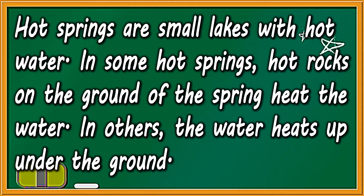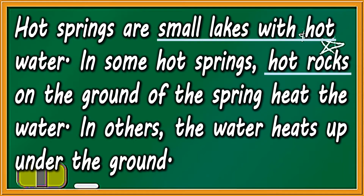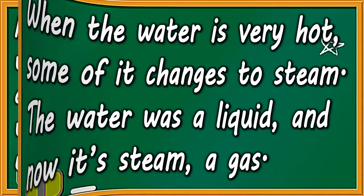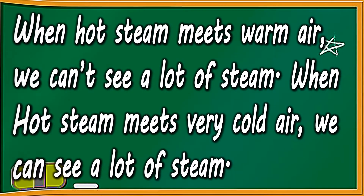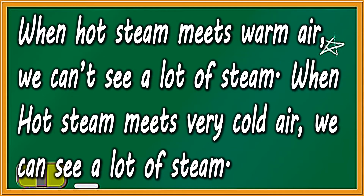Hot springs are small lakes with hot water. In some hot springs, hot rocks on the ground of the spring heat the water. In others, the water heats up under the ground. When the water is very hot, some of it changes to steam. The water was a liquid and now it's steam, a gas. When hot steam meets warm air, we can see a lot of steam.